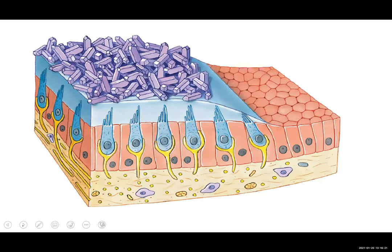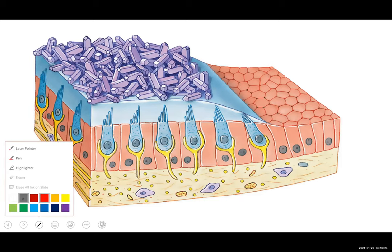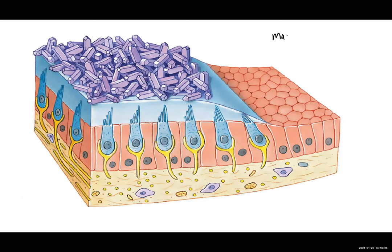We're looking at what's called the macula. If we do an A-E ending, that's plural. We see two of these located on each ear. This is where we are detecting the sensations of linear acceleration and gravity.